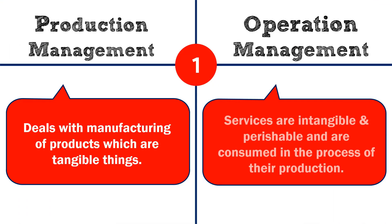Our first difference: production management deals with manufacturing of products which are tangible things, whereas in operation management, services are intangible and perishable and are consumed in the process of their production.